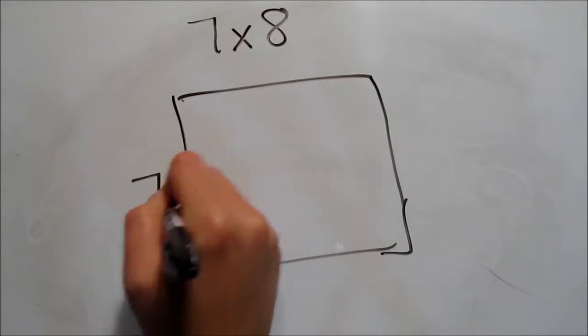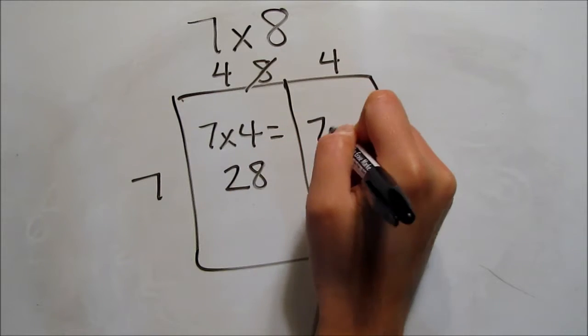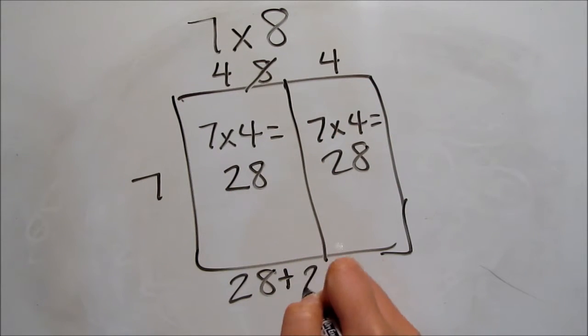Some kids see that 8 and want to break it into half, into 4 and 4. That gives us two equal sized arrays. Well, 4 times 7 equals 28, so this array will also be 28, and 28 plus 28 equals 56.